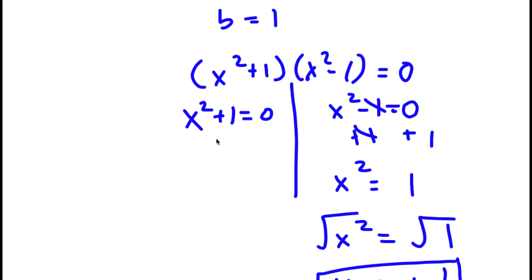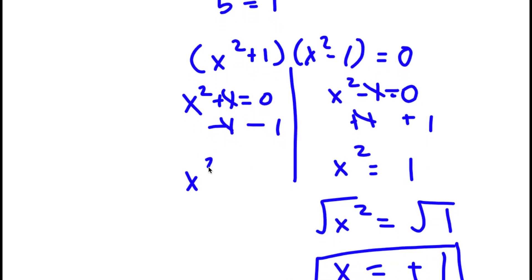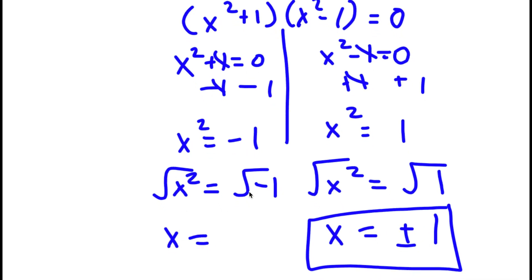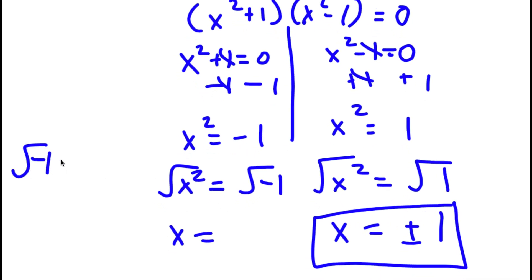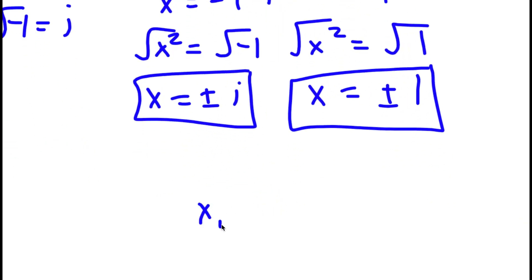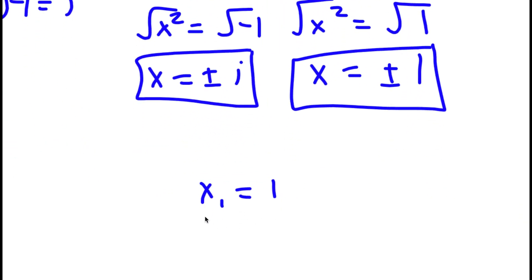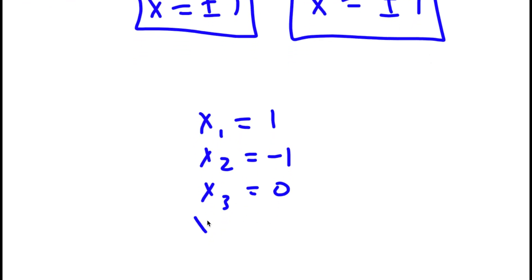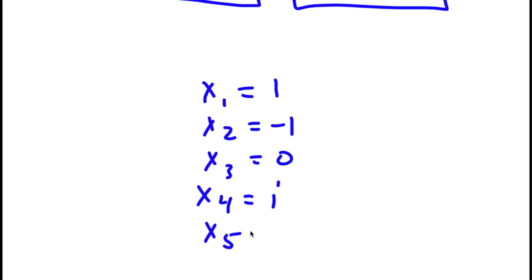For x squared plus 1 equals 0, I subtract 1 on both sides to get x squared equal to negative 1. Taking the square root on both sides, the square root of x squared is x, and the square root of negative 1 is the imaginary number i. So I have x equal to positive or negative i. These are two more solutions to this problem.